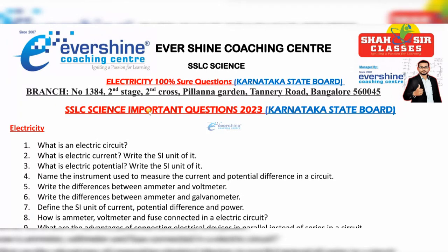The questions left out in this chapter are numericals, also called problems. In science, we have two chapters where you can expect problems: Electricity and Light — Reflection and Refraction. You should ensure that if the examiner chooses Electricity for the problem, you would not get a question from Light for the numerical, and vice versa. Out of these two chapters, any one chapter can be expected for problems.